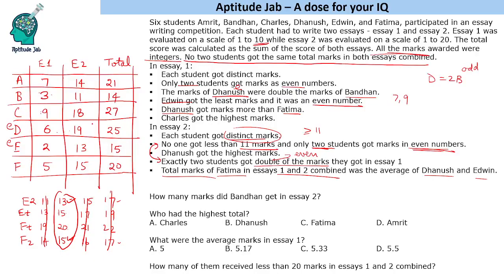Now let us look at the questions. First: how many marks did Bandhan get in SA2? Bandhan got 11 marks. Second: who had the highest total? Charles had the highest total of 27 marks. Third: what were the average marks in SA1? Adding all SA1 scores gives 32, divided by 6 equals 5.33. Fourth: how many students received less than 20 marks in SA1 and SA2 combined? The answer is 2 students.